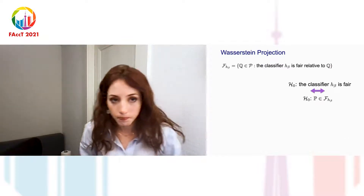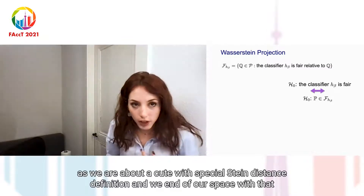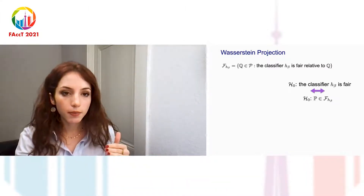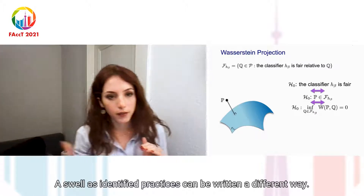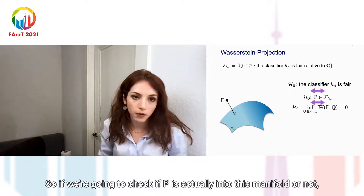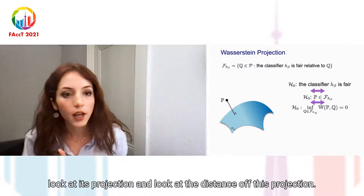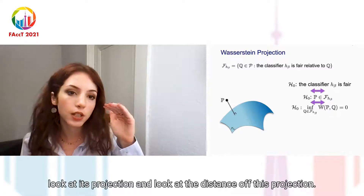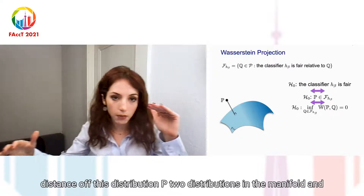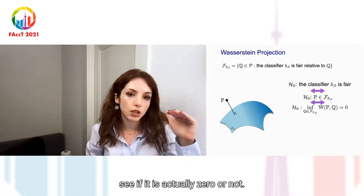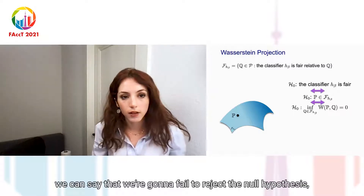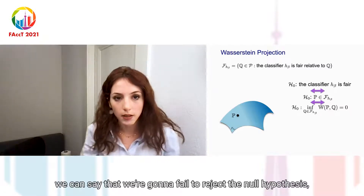Equipped with the Wasserstein distance, our null and alternative hypotheses can be written in a different way. To check if P is in the manifold, we can alternatively look at its projection and compute the minimum Wasserstein distance from P to the distributions in the manifold. If this distance is zero, we fail to reject the null hypothesis. It turns out that if we denote the squared distance by rho, it is equivalent to solving a one-dimensional optimization problem, even though the initial problem is non-convex — and it lies in a bounded space.